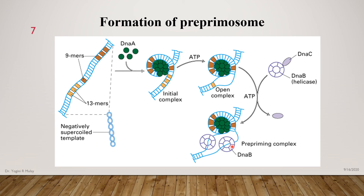This DNA B protein actually comes in a ring form, and six subunits of DNA B unite with each other — therefore it is known as a hexamer. Two different ring-like hexamers bind to the two strands of the DNA. One hexamer moves in one direction, continually breaking hydrogen bonds so that more and more single-stranded DNA becomes available. Similarly, the other hexamer moves in the opposite direction, also breaking hydrogen bonds, making more single-stranded DNA available for replication. This complex is known as the pre-priming complex.